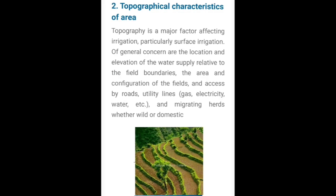Next हमारे पास topography है — किस type का area है। सबसे important factor है कि किस type का area है। जैसे पहाड़ी area है, तो वहाँ पे आप अच्छे से land filling नहीं कर सकते। यह जो diagram में भी दिखा रखा है। Topography एक major factor है जो affect करता है irrigation को, particularly surface irrigation को।